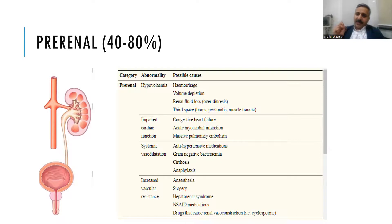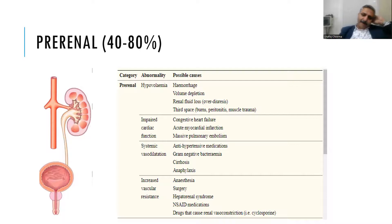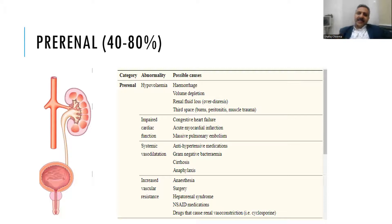The heart pumps a significant amount of blood to the kidneys, so congestive heart failure, acute MI, massive pulmonary embolism, and pericardial tamponade can all lead to renal hypoperfusion and cardiorenal syndrome. Systemic vasodilation from sepsis, anaphylaxis, or cirrhosis can also decrease renal perfusion. After surgery, anesthesia increases the vascular tone of vessels supplying the kidney. Certain drugs like cyclosporine and NSAIDs — by decreasing prostaglandin production — can also cause pre-renal azotemia.